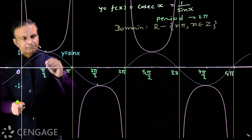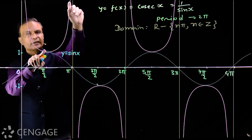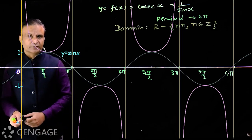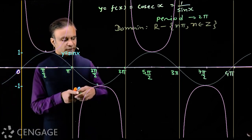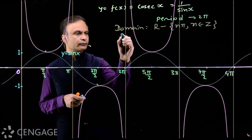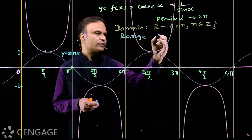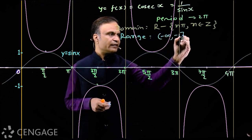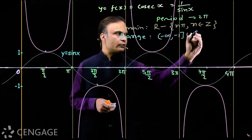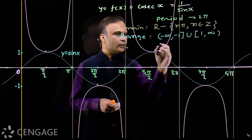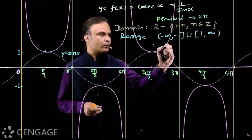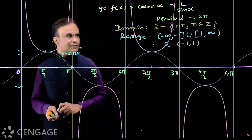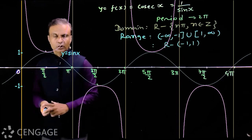What is the range of the function? You can see that the value increases from 1 to infinity and decreases from −1 to minus infinity. So the range of cosec x is (−∞, −1] ∪ [1, +∞), or equivalently, all real numbers excluding the open interval (−1, 1).